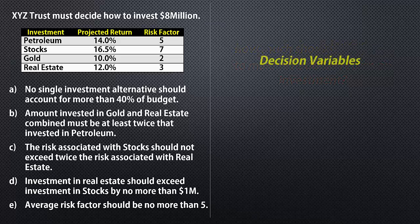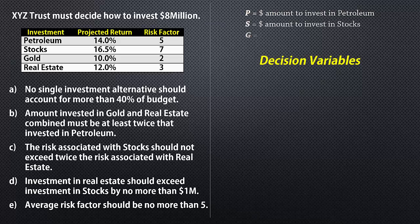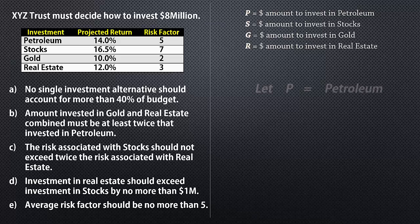Let's begin by defining the decision variables. Since return on investment depends on how much is invested in each alternative, we can define the decision variables as follows. Let P equal the amount to invest in petroleum, S the amount to invest in stocks, G the amount in gold and R the amount in real estate. Note that it would be insufficient to simply say let P equal to petroleum — we need to clearly specify the unit, such as whether P represents the number of barrels, cost per barrel, risk, or return on investment in petroleum.